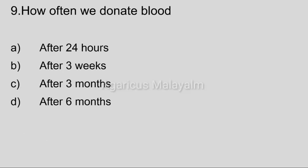Ninth question: How often can we donate blood? Option A: After 24 hours. Option B: After 3 weeks. Option C: After 3 months. Option D: After 6 months. Correct answer: Option C, After 3 months.